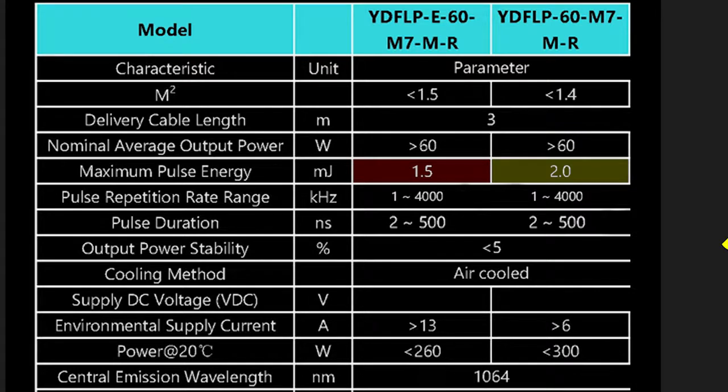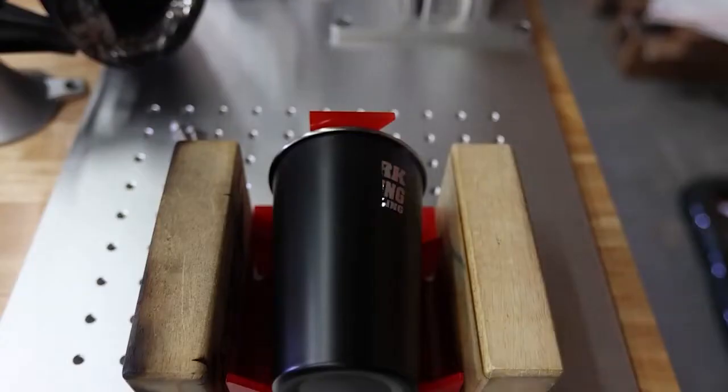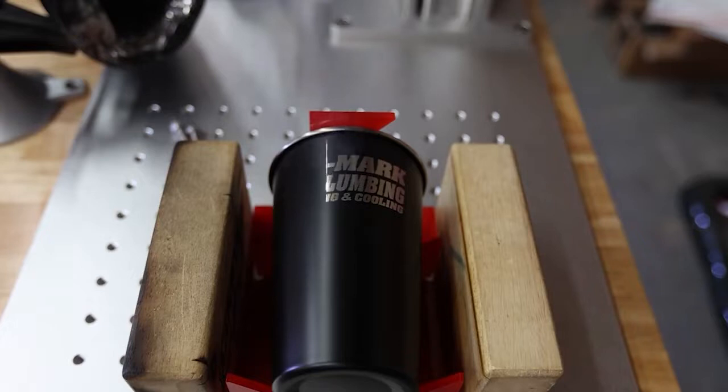Don't get me wrong, 1.5mJ is great, and still higher than what I would consider industry average, but the 2mJ pulse power that the full power model offers packs a serious punch. I bring this up because it's extremely common for vendors of the 60W M7 sources to include the budget model, as it keeps the overall price of the machine down. Not here. Again, the SFX is a business class machine, and that means you get the full power source with that sweet 2mJ of pulse output power.